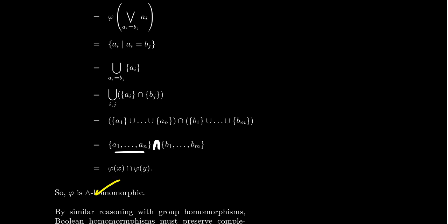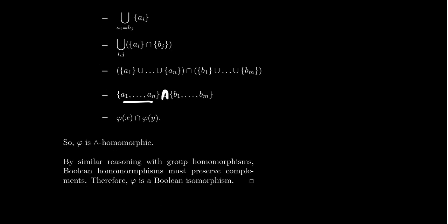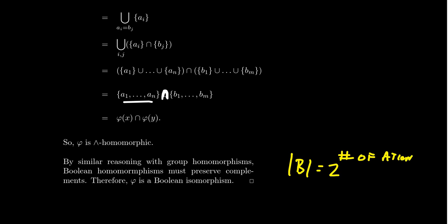This proves that φ is meet homomorphic. As already discussed, complements are preserved automatically by Boolean homomorphisms. So since we have a bijective Boolean homomorphism, this gives a Boolean isomorphism. Every atomic Boolean algebra is isomorphic to a power set with unions and intersections. Settling for the finite case: every finite Boolean algebra is isomorphic to a power set, and as such the order of the Boolean algebra is necessarily 2 raised to the number of atoms in the system. That classifies all finite Boolean algebras.